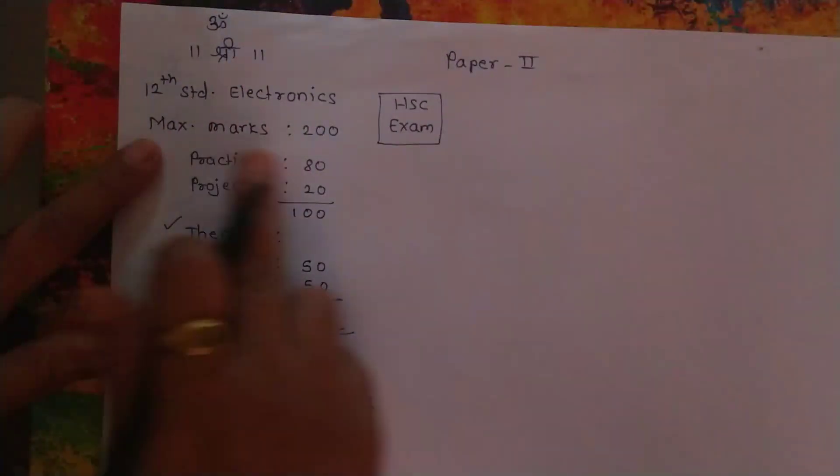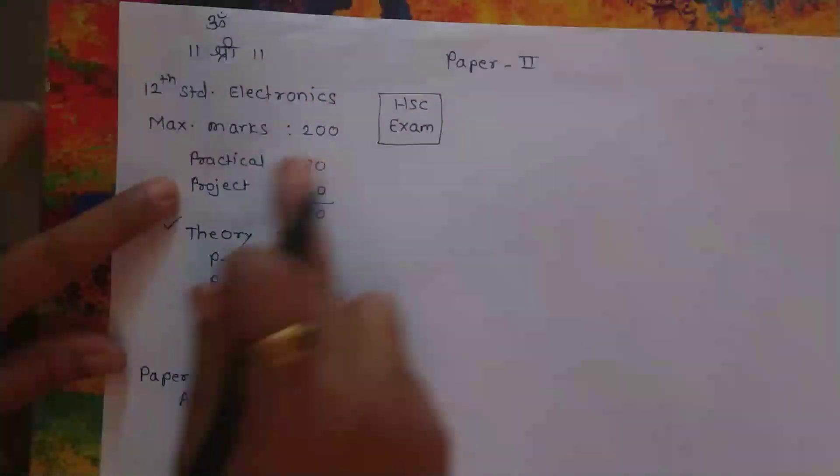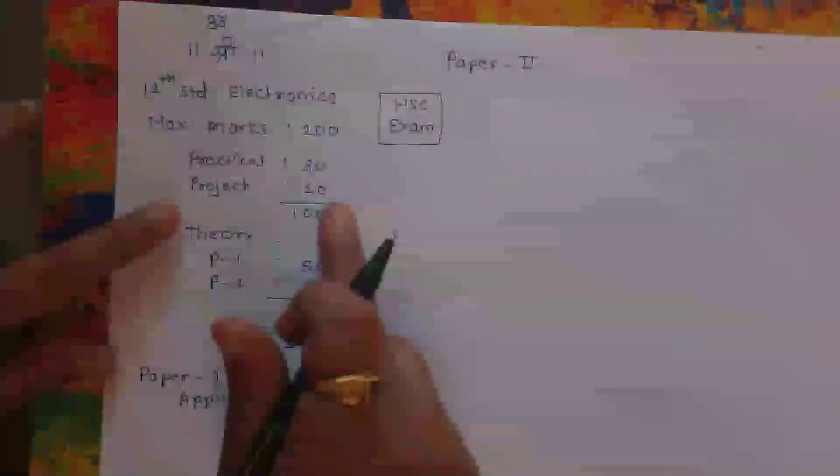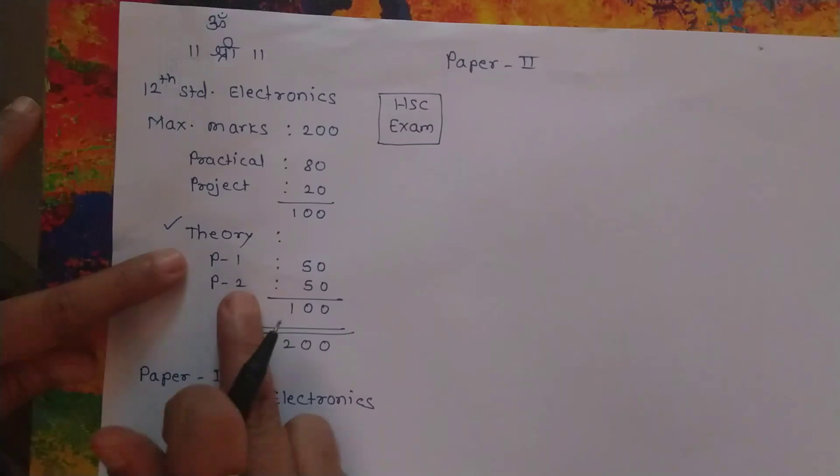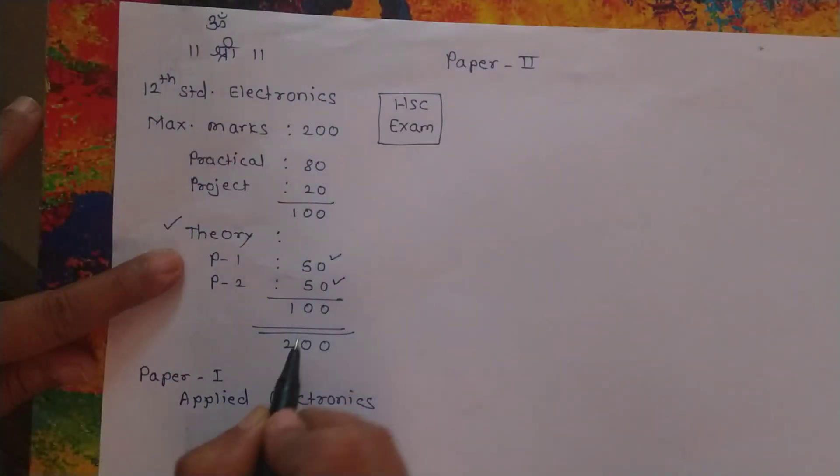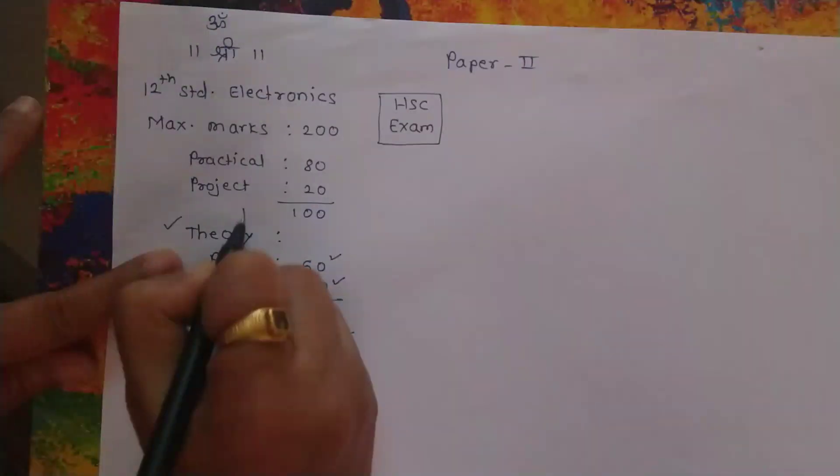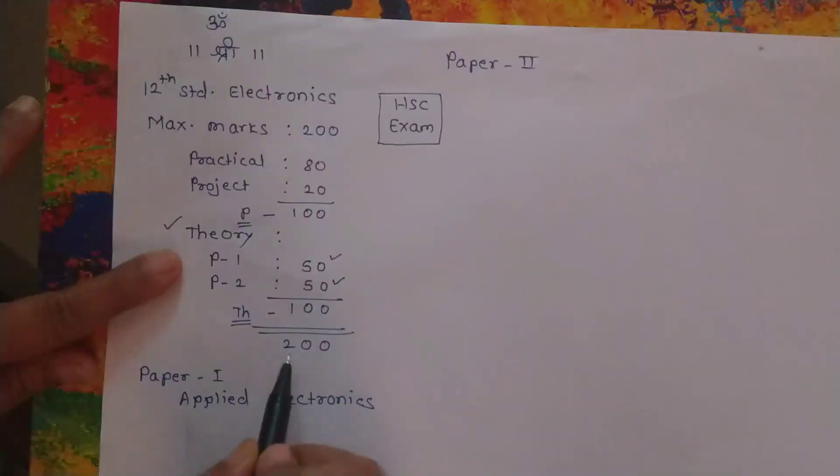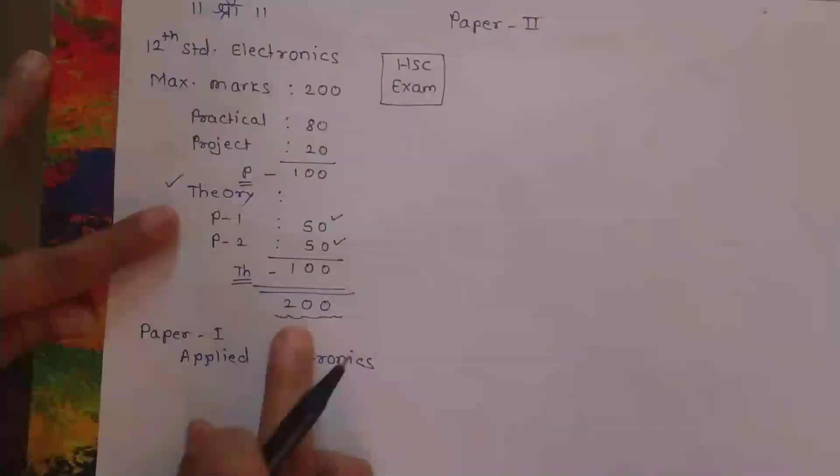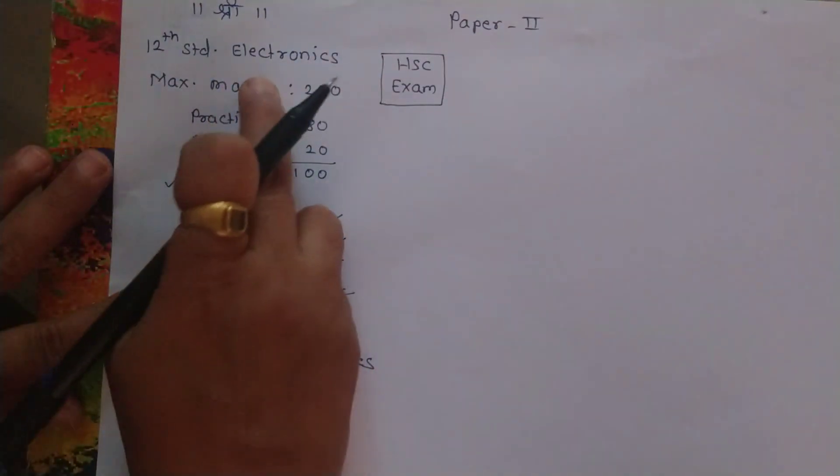It is a subject with maximum marks of 200. Practical session gives you 80 marks, project gives you 20 marks, but for theory there are two papers, Paper 1 and Paper 2, each of 50 marks. So altogether, theory is 100 and practical is 100, making a maximum score of 200 in 12th standard electronics.